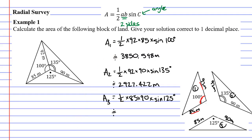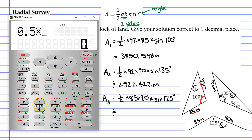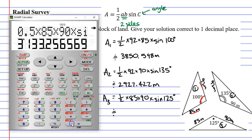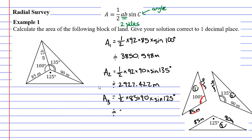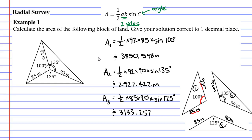Bringing up our calculator we're going to give an approximate answer to this. 0.5 times 85 times 90 times sine of 125 equals. And we get 3133.257 metres. Excellent.